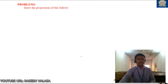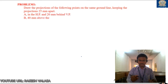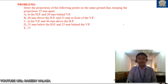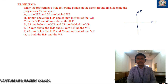The problem: draw the projection of the following points on the same ground line, keeping the points 25mm apart. This is the horizontal plane and this is the vertical plane. The universal space is divided into four quadrants — this is the first, this is the second, this is the third, and this is the fourth quadrant.